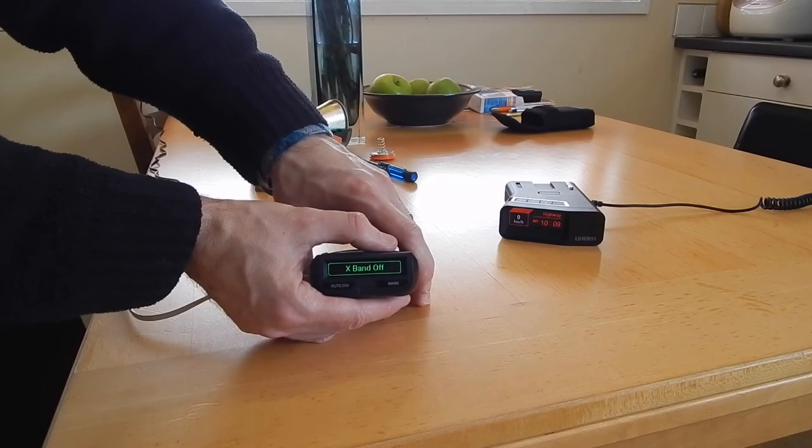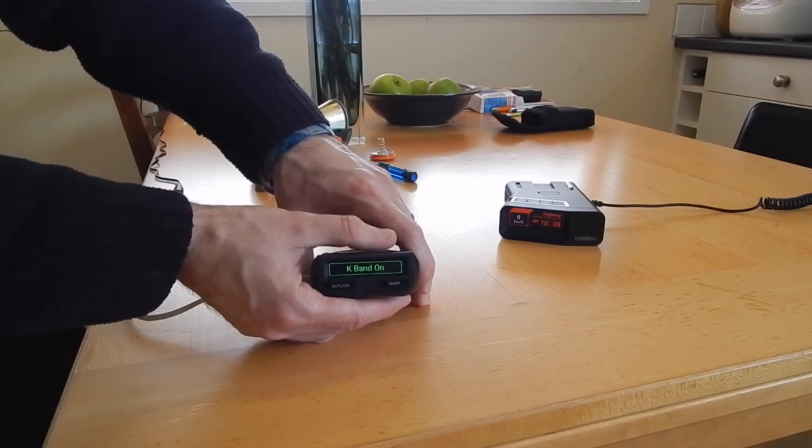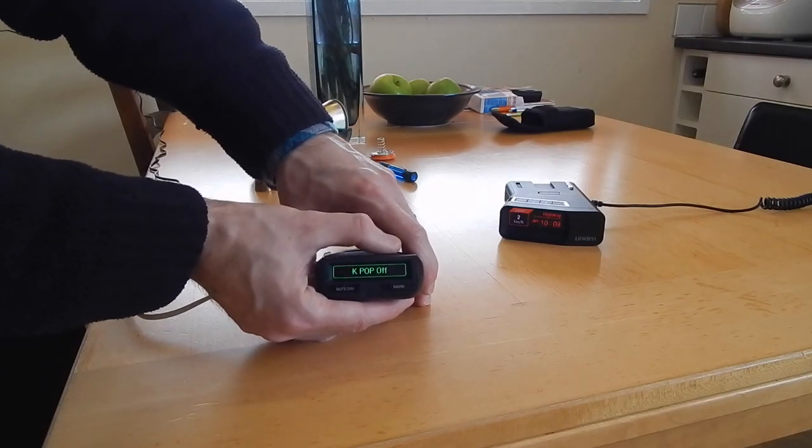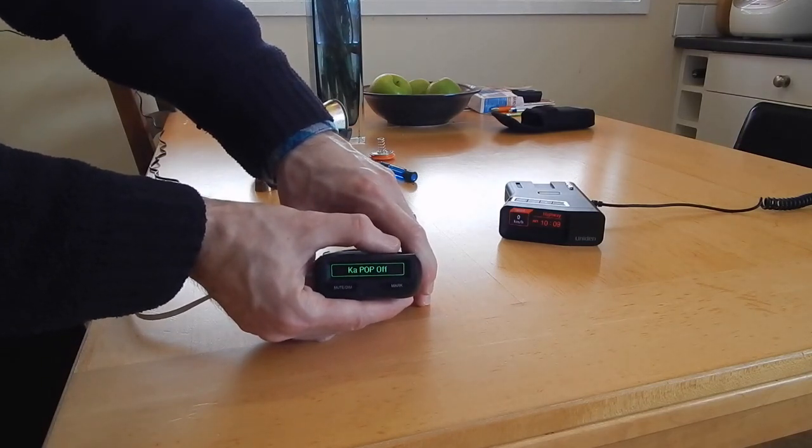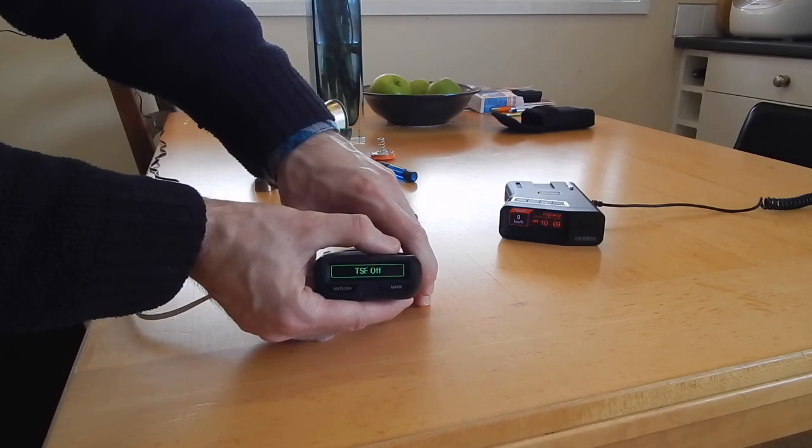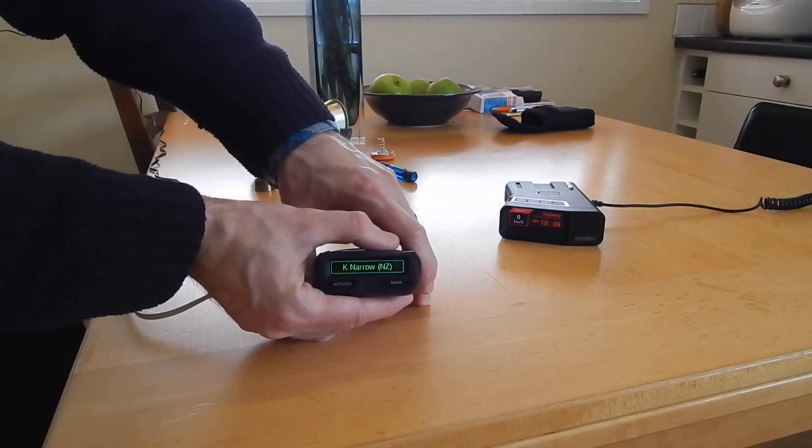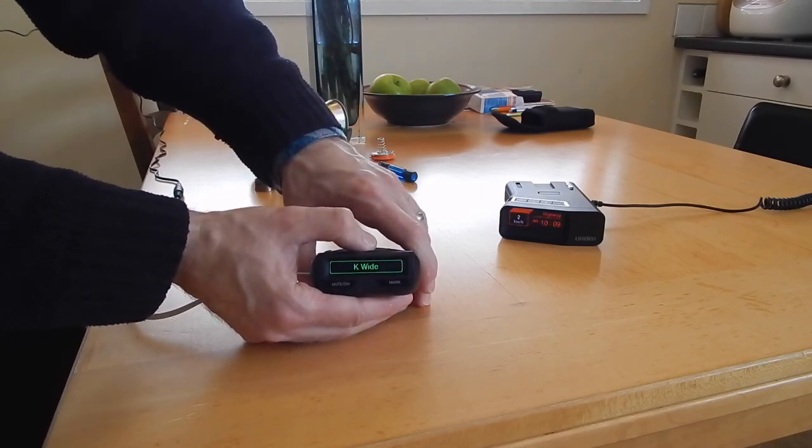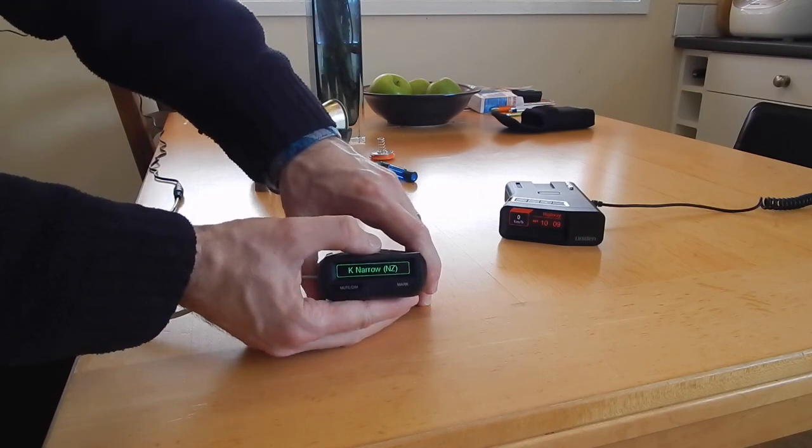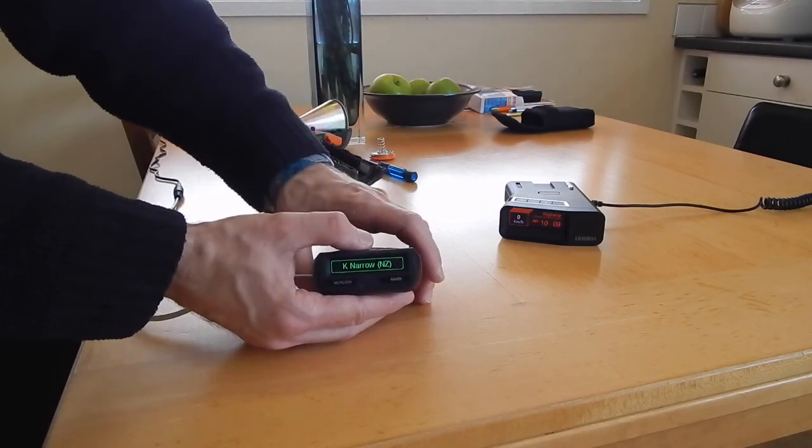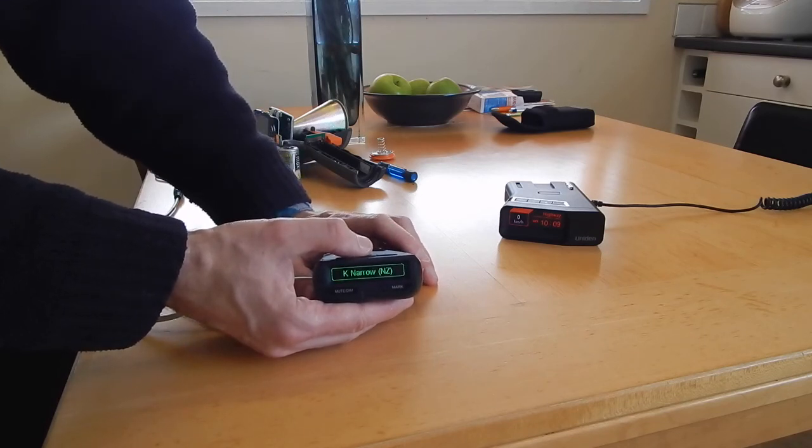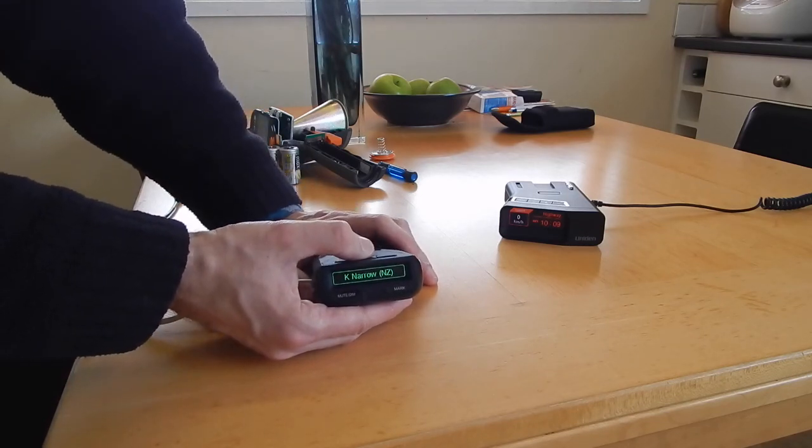We've still got x-band, k-band. Now, the main difference is we've got k-wide as normal R3, we've got k-narrow NZ. So k-narrow on this is now 24.05 to 24.100.